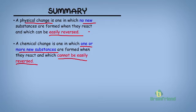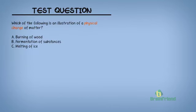Let us do a quick test. Which of the following is an illustration of a physical change of matter? If you chose either A or B, then you are wrong. The correct answer is the melting of ice — option C. Remember that in a physical change, new substances are not formed and the change can be easily reversed. In options A and B, new substances are formed: in the burning of foods and in the fermentation of substances. It is only in the melting of ice that we do not have the formation of a new substance.